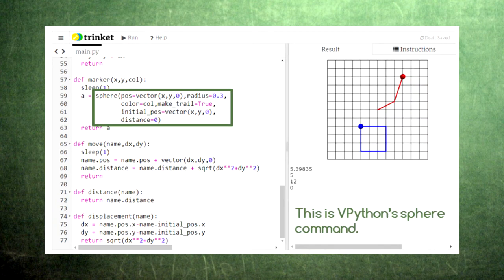The functions used in this code are pretty straightforward to understand. The marker function uses vpython's sphere object, giving it a position, a radius, and a color. The make trail option allows us to see the path followed by the sphere. The initial position and distance variables will be useful later.